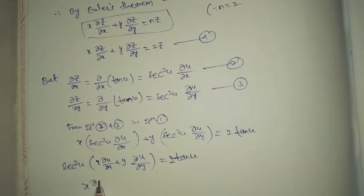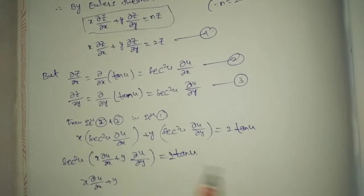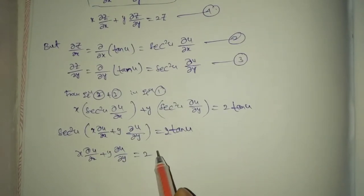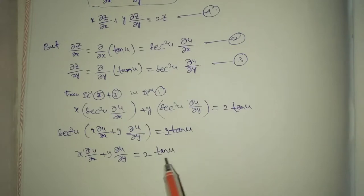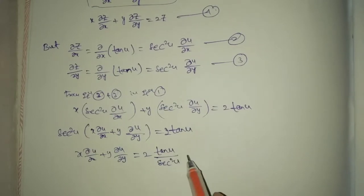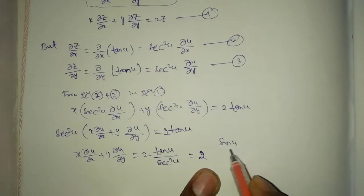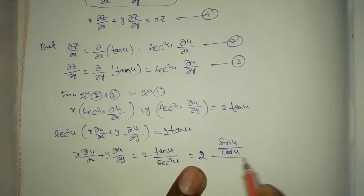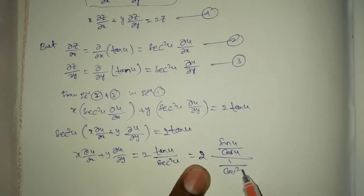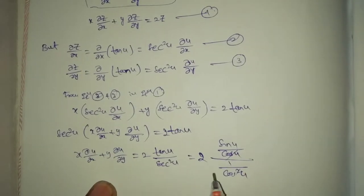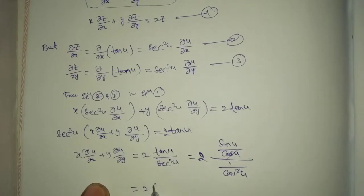Now x del u by del x plus y del u by del y equal tan u by secant square u, that equals 2 sin u by secant square u. Cos cos cancel. That equals 2 sin u into cos u.